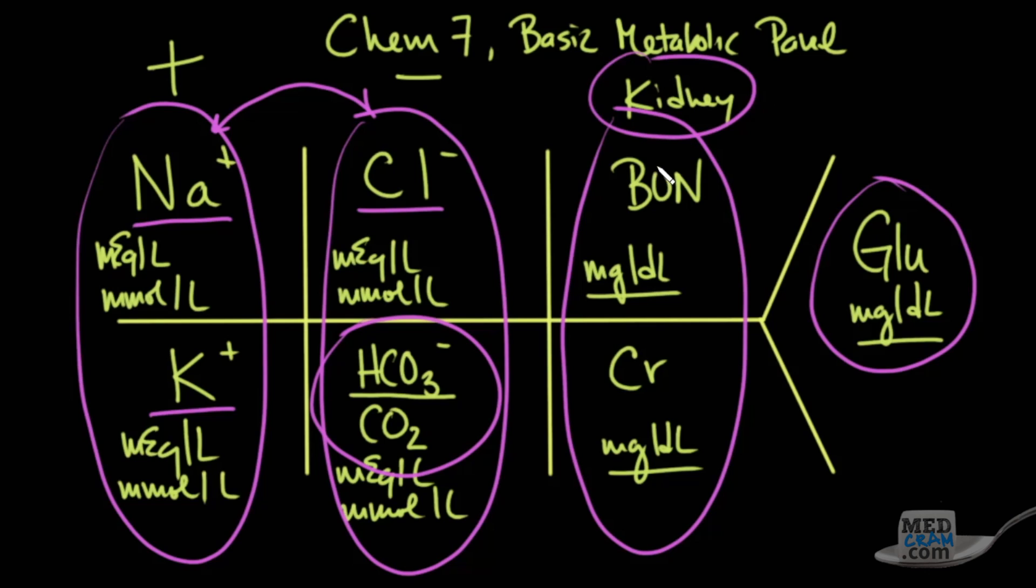And here we have the kidneys, and we have the BUN, which is filtered in the glomerulus but also reabsorbed. And we have the creatinine, which is filtered at the glomerulus but also excreted in the distal convoluted tubule. And we'll talk more about the BUN and the creatinine. And then finally, we'll also talk about the glucose concentration and what that has to do with.